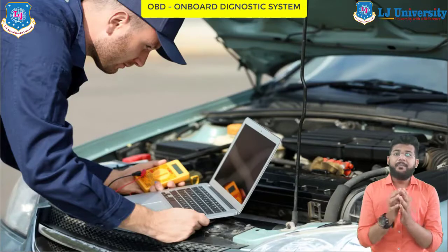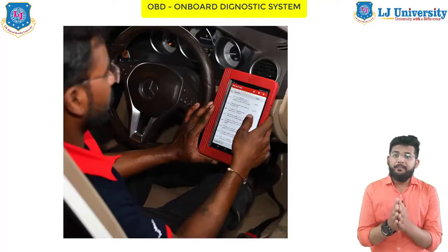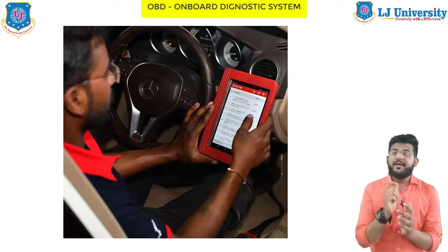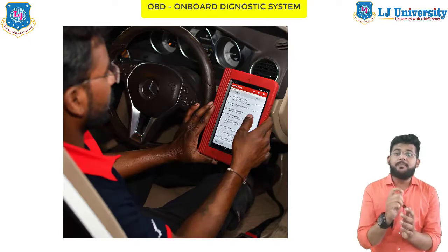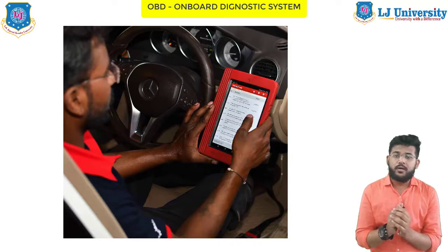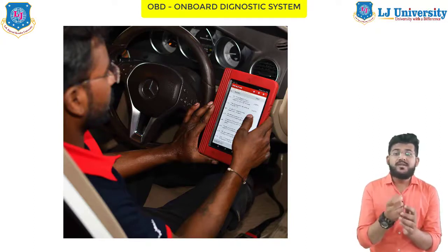An important part of the OBD system is the ECU, which stands for Engine Control Unit. The ECU is practically the vehicle's brain, responsible for gathering all the information about your vehicle.